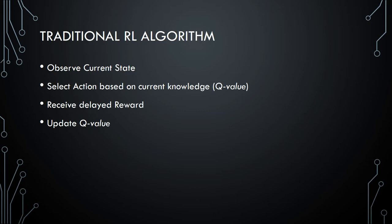In a traditional RL algorithm we observe the current state, select an action based on the current knowledge of the environment and receive the delayed reward which may come after a few time steps. On analyzing this reward and action we update the Q-value, or the knowledge value, of the current environment.